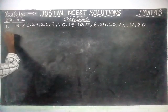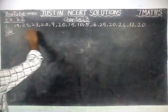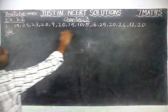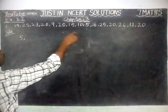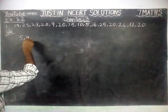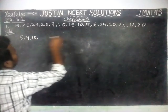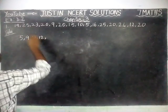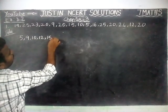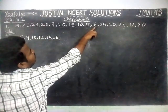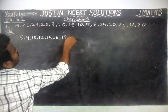So first we are going to write it in ascending order. The smallest value is 5, so we write 5 first. Next number 9, then 10. After 10, 12 is there. Then 15, then 16, after that 19.